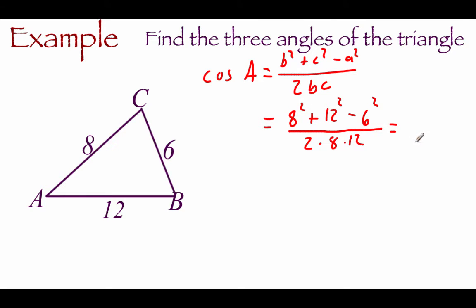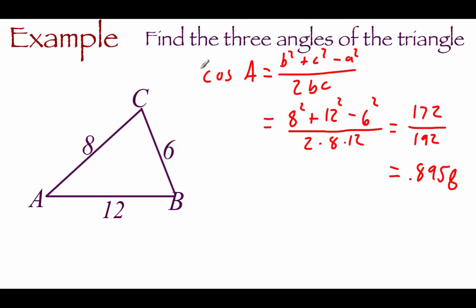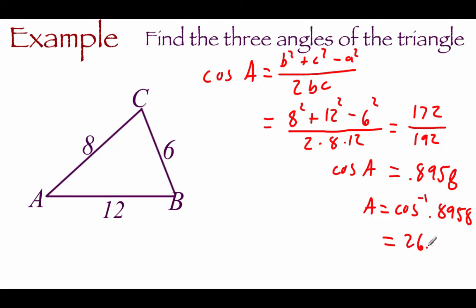Simplifying the numerator, we end up with 172. On the bottom we get 192. Dividing that out to four decimals, we get 0.8958. That's the cosine of angle A, so in order to figure out what angle A is, we're going to do an inverse cosine of 0.8958. When we type that into our calculator, we get about 26.4 degrees for angle A.